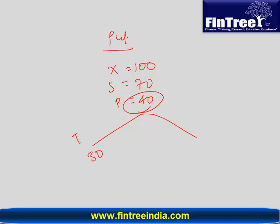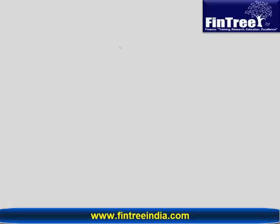That 30 is called time value. Sorry, yes, intrinsic value. How about that extra 10? That's the time value or speculative value. Are we good to move further? Last example, again a put option.